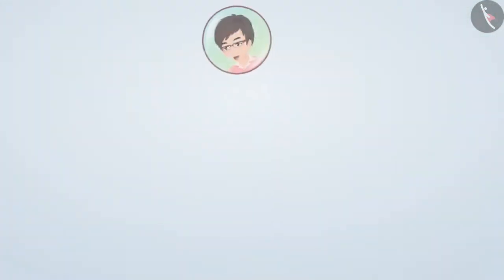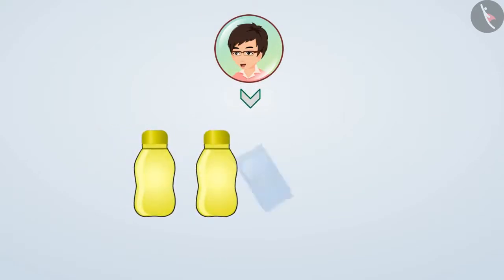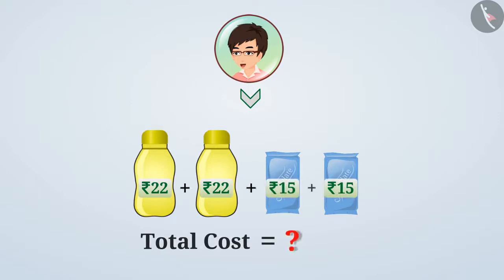Just think. Nishant buys two identical bottles of juice and two identical chocolates from a shop. If a juice bottle costs 22 rupees and chocolate costs 15 rupees, what will be the total value of all the items?